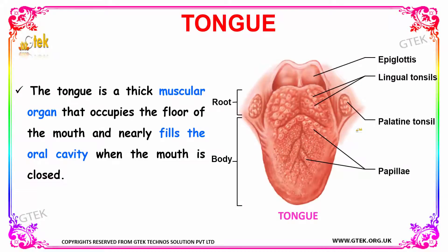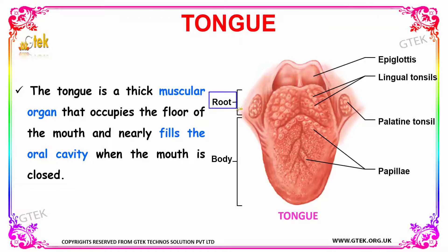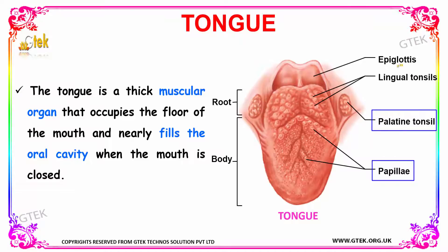Next we are going to see about the tongue. The tongue is a thick muscular organ which occupies the floor of the mouth and nearly fills the oral cavity when the mouth is closed. The root portion and body of the tongue can be seen here. Your taste buds are located on the papillae of the tongue. Your palatine tonsils are located on either side of the tongue, and your lingual tonsils are located at the base. The hollow cavity leading into your pharynx is marked by the epiglottis.